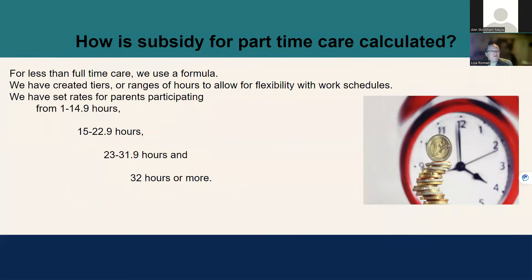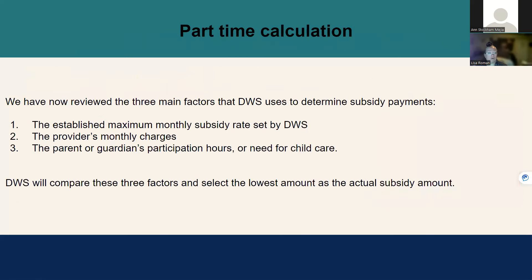For less than full-time care, we use a formula based on approved hours. We have created four tiers: 1 to 14 hours per month, 15 to 22.9 hours, 23 to 31.9 hours, and 32 hours or more. We've now reviewed the three main factors DWS uses to determine subsidy payments: the established maximum monthly subsidy rates, the provider's monthly charges, and the parent or guardian's participation hours. DWS will compare these three factors and select the lowest amount as the actual subsidy amount.